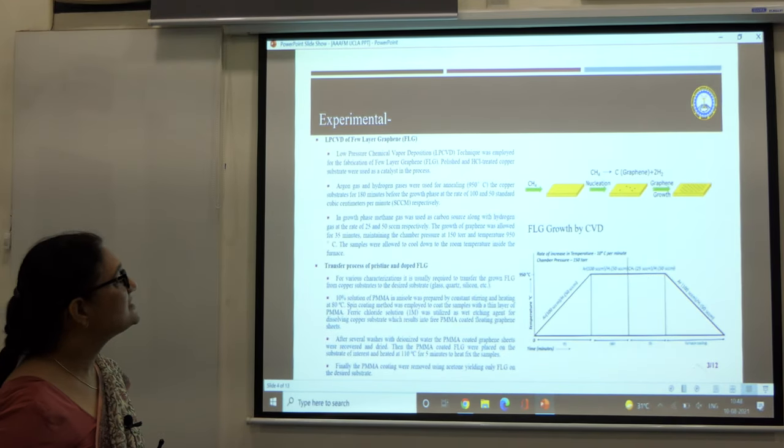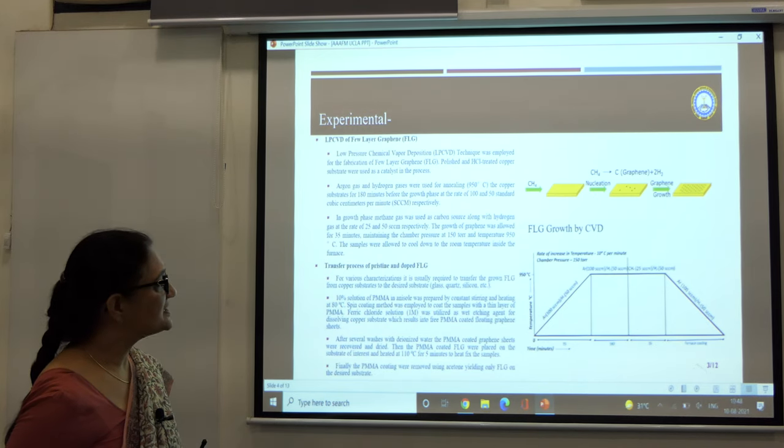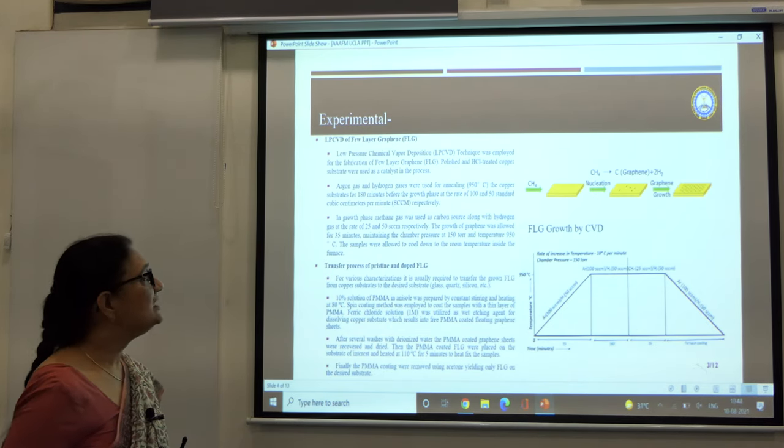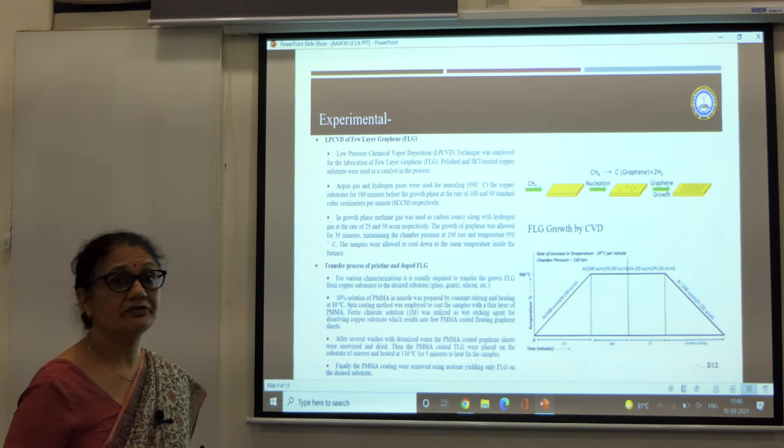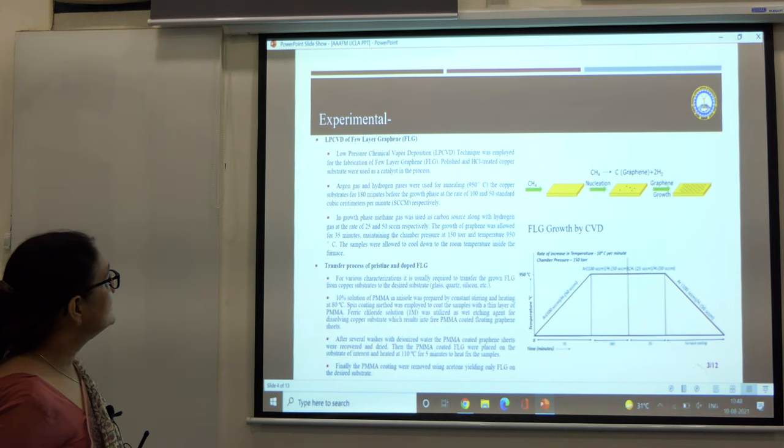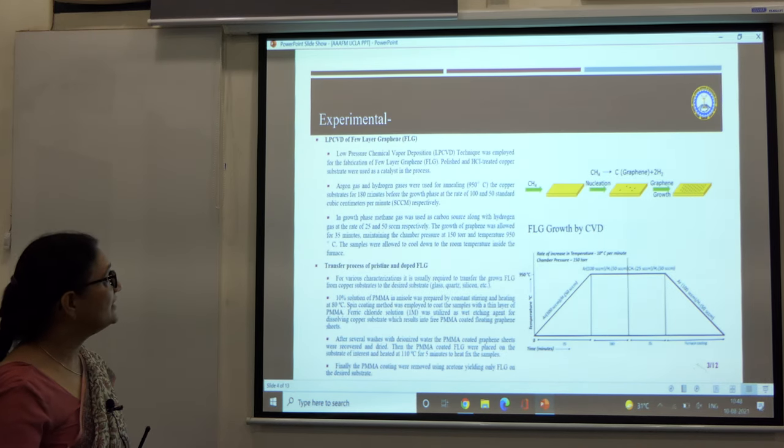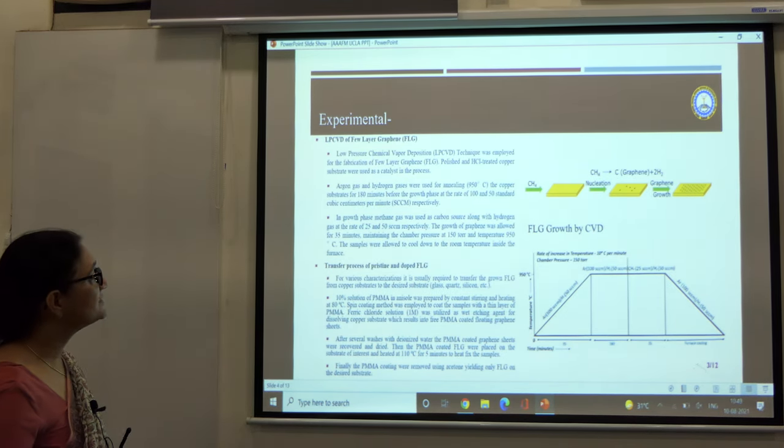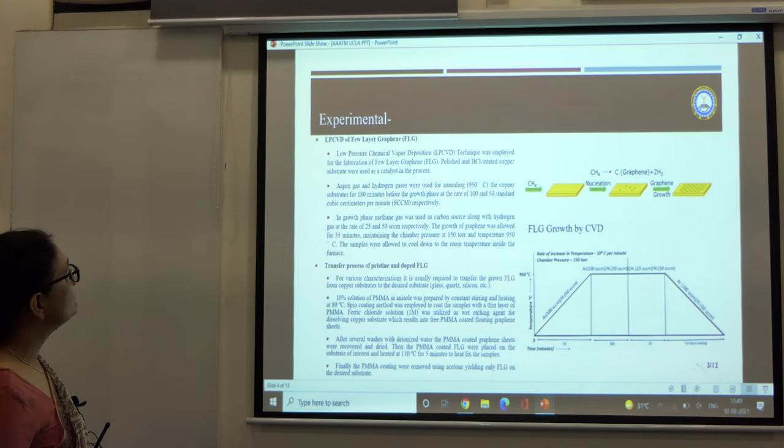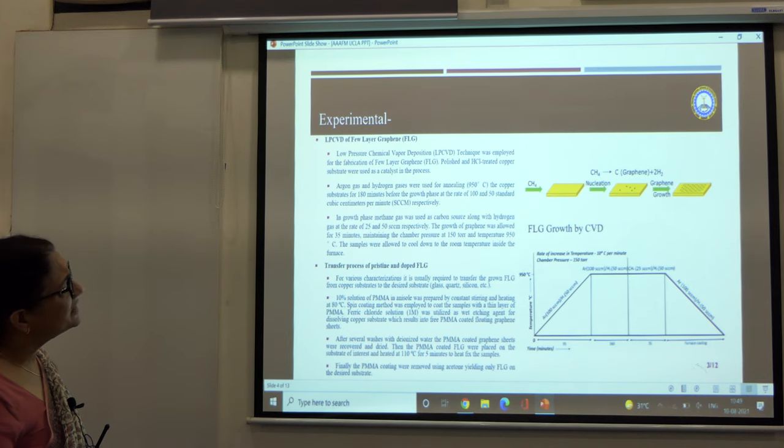This is the method which we have used to grow the graphene, the pristine and the doped. In case of ammonia used as the source of carbon in the graphene, the argon gas and the hydrogen gas are used for annealing the copper substrate for 180 degrees before the growth phase at a rate of 150 SCCM per minute respectively. We have taken polished and HCl treated copper substrate as a catalyst in the process.